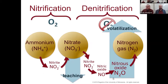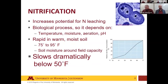Denitrification happens when the soil becomes completely saturated. Bacteria in the soil that need oxygen will take it from the nitrate instead of the atmosphere. This process happens when the soil is completely saturated and we end up with nitrogen gas going into the atmosphere. Biological processes happen primarily when things are warm — the cooler the soil, the slower these processes. We recommend not making fall applications until soil temperature is below 50°F, where biological activity slows greatly.